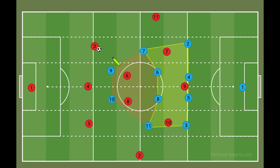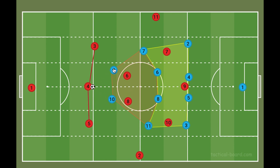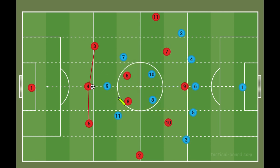There are many different approaches to pressing a back three. Teams that use a back three typically like to create a numerical advantage in the first line compared to the first line of pressure, and there are a few different approaches. With a double pivot, you'll often see two forwards use their cover shadows to block entry passes, or you can use a three-man front line. With a three-man front line, you start to see the natural occurrence of cover shadows from the pressing players.